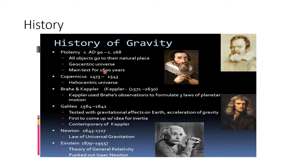There were many scientists who gave different theories about the universe. First, there was a scientist called Ptolemy. Ptolemy gave a very important theory called the geocentric theory of the universe. Geocentric — 'centric' means center. This theory says that Earth is at the center, and all the other planets including the Sun are revolving around the Earth. But we know that is not correct.